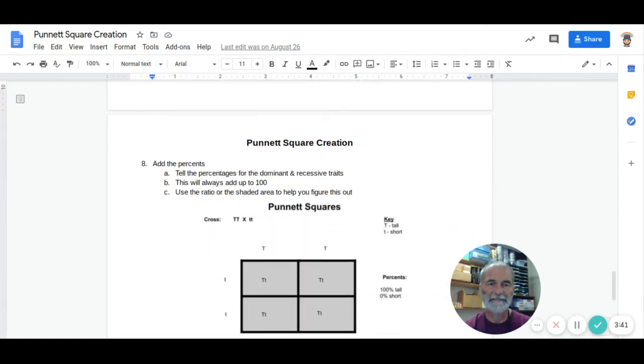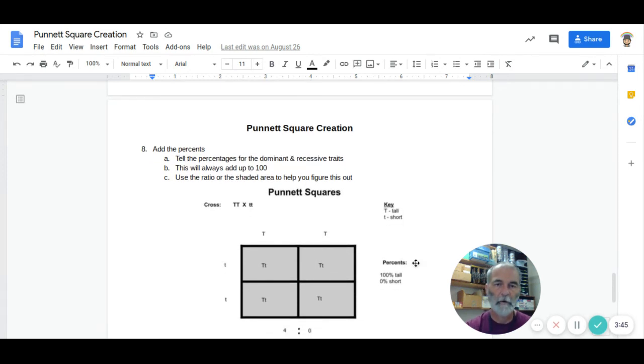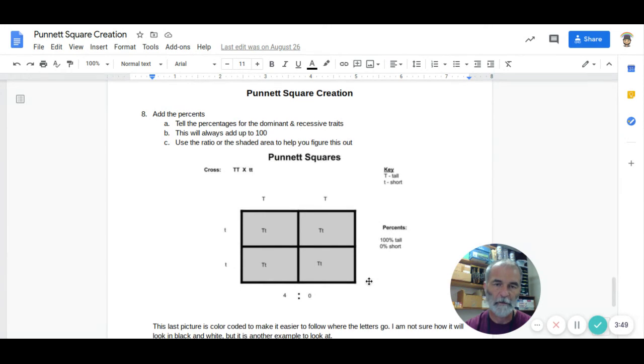We end up with adding the percentages. What percent is going to be dominant? If you look at our ratio, you can see that four out of four, which is 100%, and zero out of four, which is 0%.